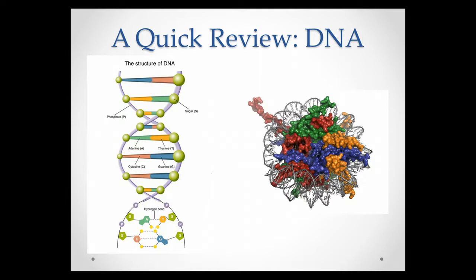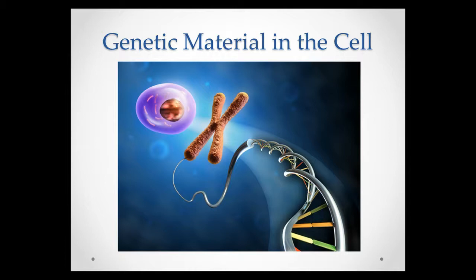Histones are the proteins that the DNA wraps around. As we talk about epigenetics, that becomes really important because there are changes that happen to the histones as well. This more globular figure represents those histones — the different colors are different types of histones that that DNA wraps around, and you see the gray DNA wrapping around that histone core. The DNA is condensed into chromosomes and those are found in the nuclei of our cells.